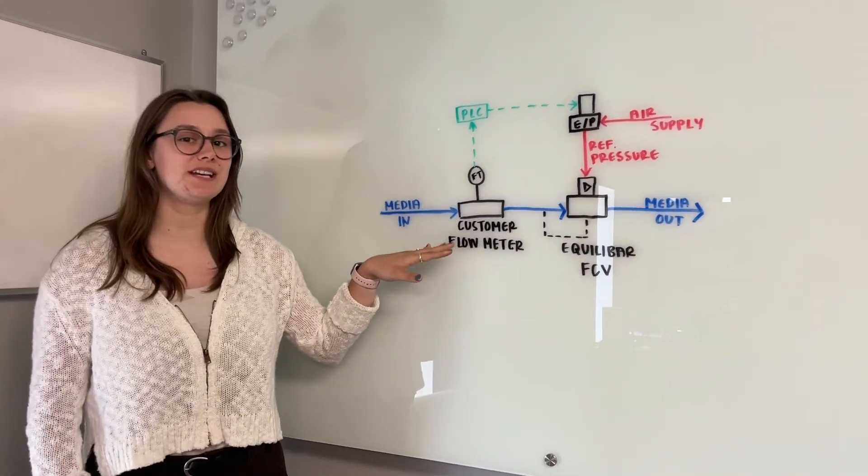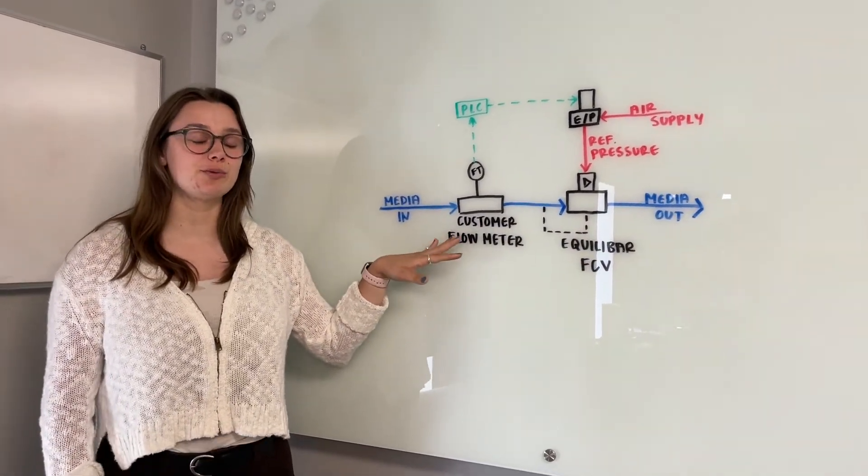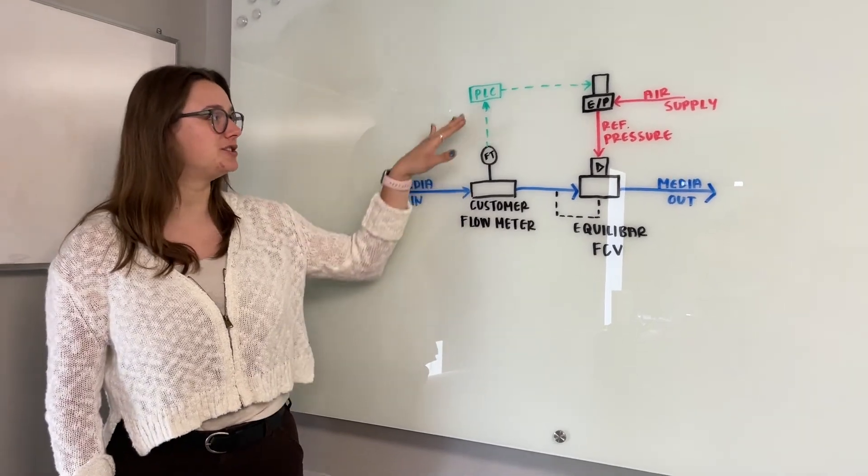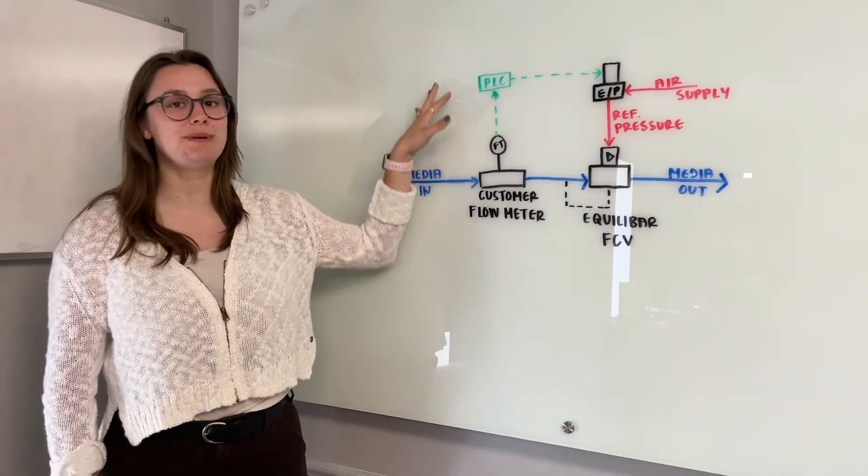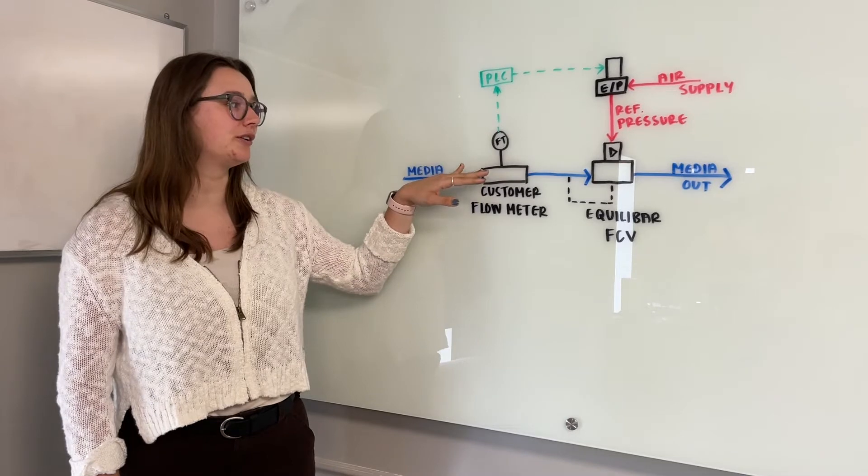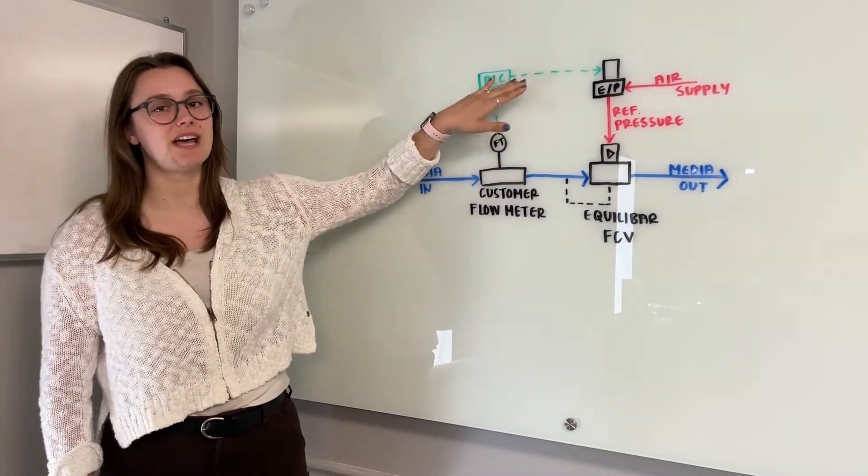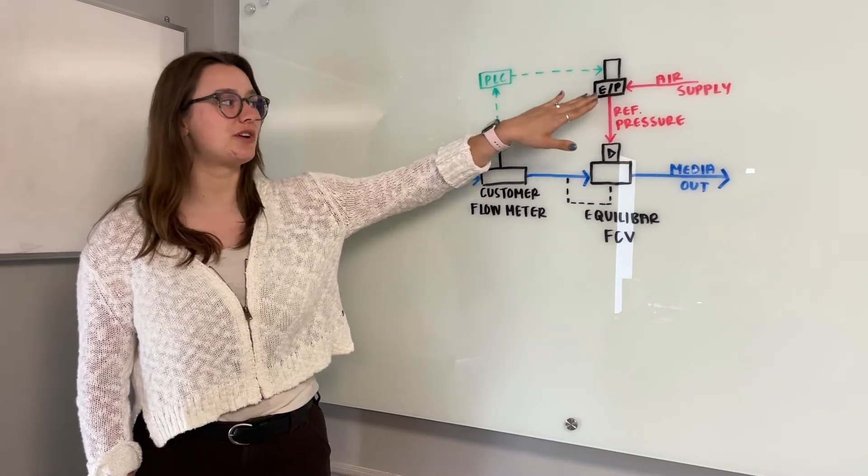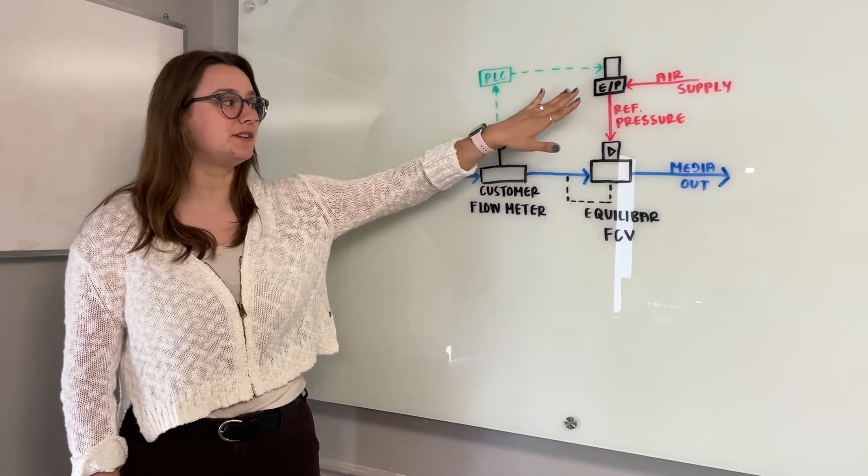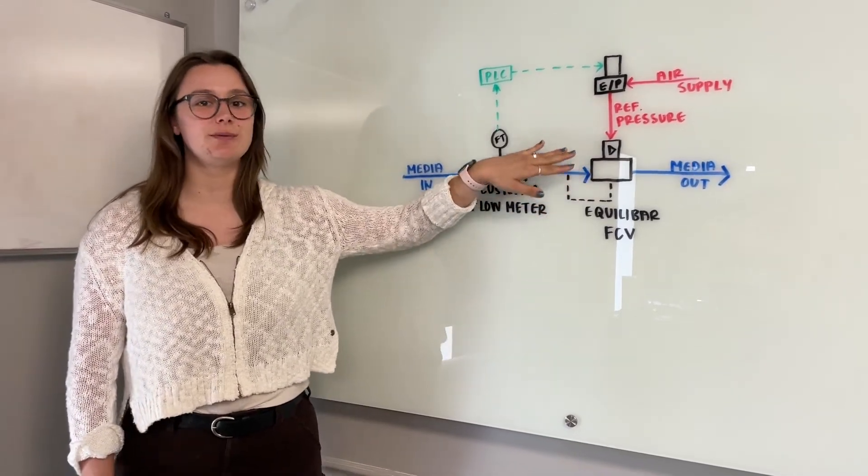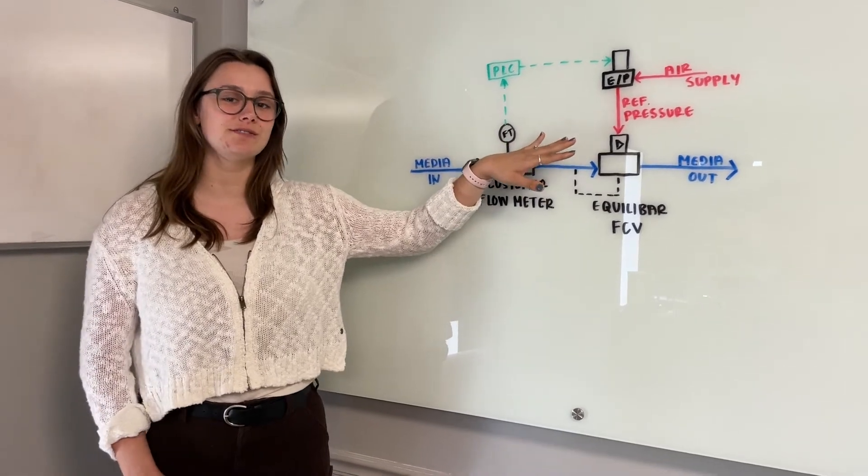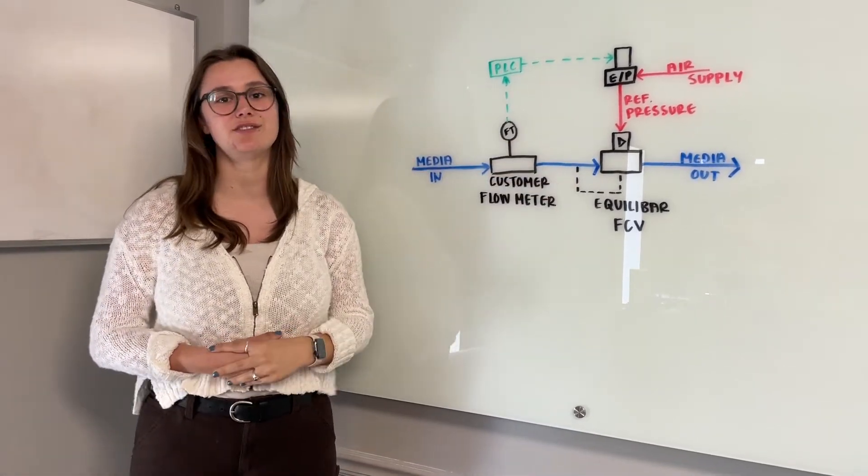The flow meter is translating the measured flow to a 4 to 20 milliamp signal which is going to the PLC, being run through a PID loop comparing the measured flow to the set point. That is translated to a 0 to 10 volt output signal which drives our QPV. The QPV will increase the pressure on the dome of the Equilibar to decrease the flow in the system and vice versa to increase the flow.